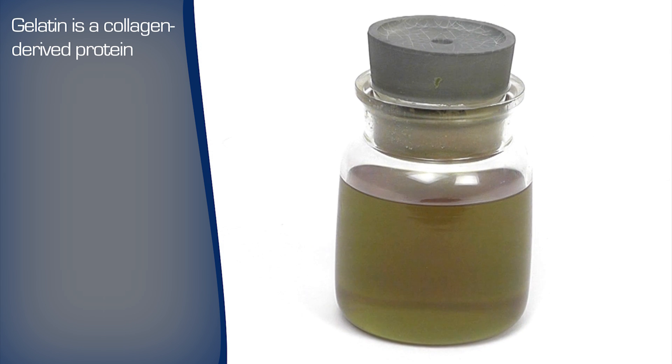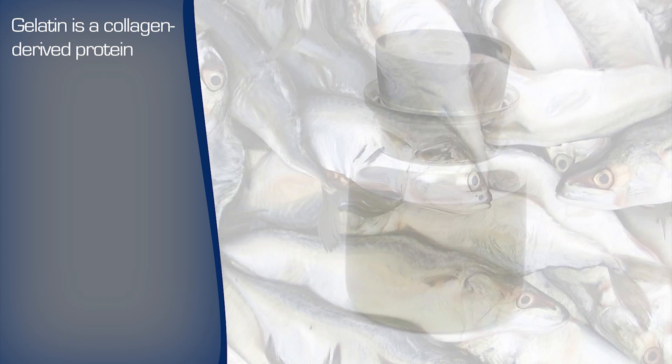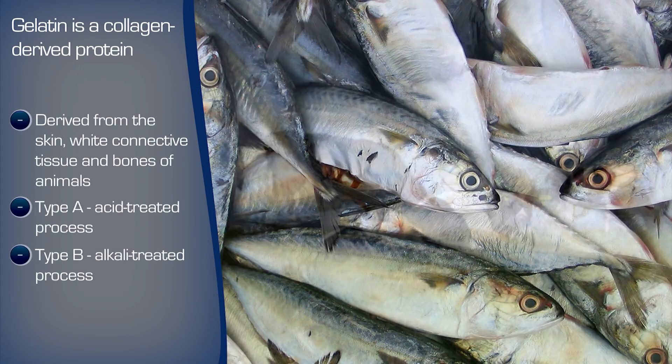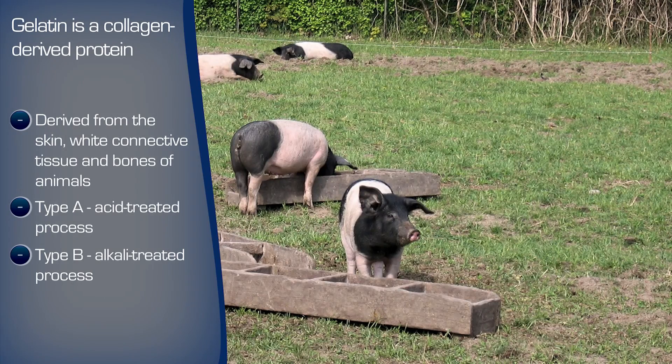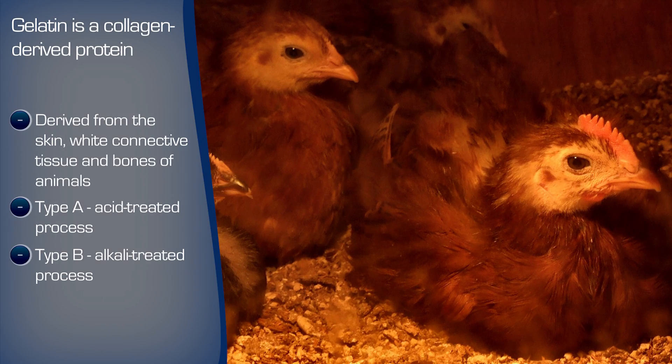Gelatin is a collagen-derived protein widely used as such an ingredient. Derived from the skin, white connective tissue, and bones of animals, there are two types: Type A via acid-treated processes, and Type B which is alkali-treated.